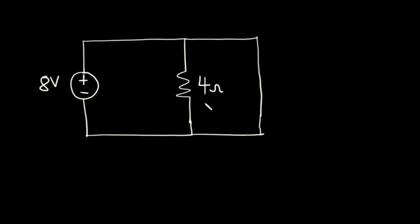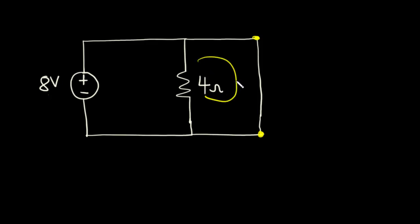One way to identify a short circuit is if there appears to be very little or no electrical resistance between two nodes. Between these two nodes, there is no or very little electrical resistance, so this is a short circuit. Again, if we can go through an entire loop without passing through any other circuit element except one resistor, then that circuit is a short circuit. We realize that for this circuit, we can go through the entire loop without passing through any other circuit element except the 4-ohm resistor, so this circuit is a short circuit.